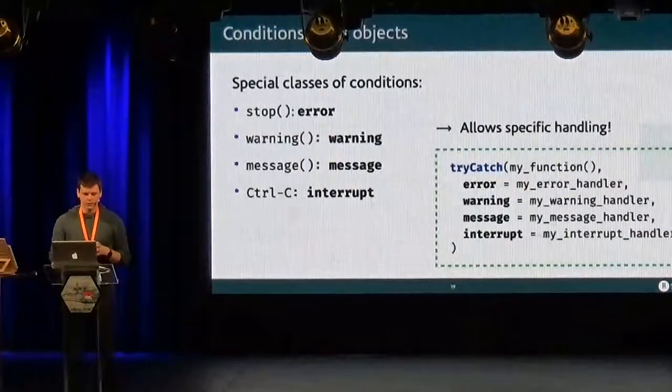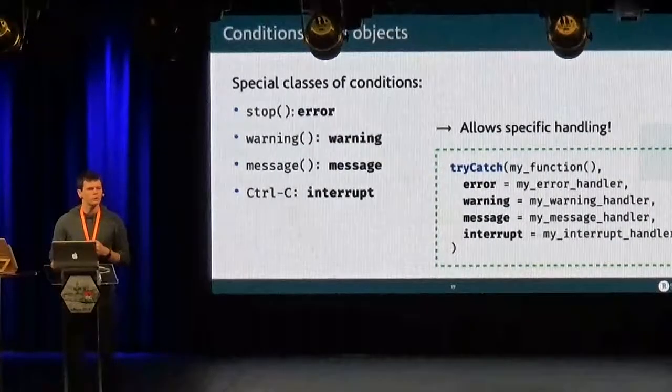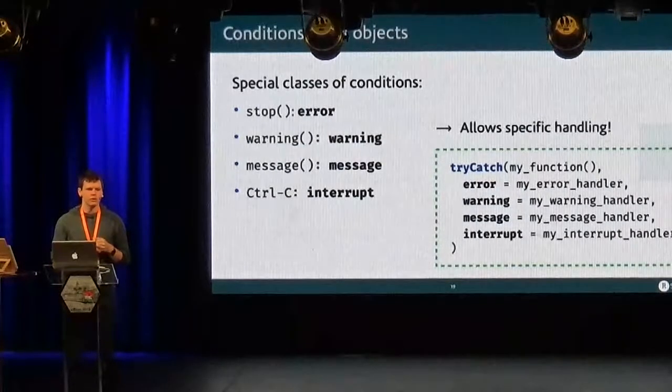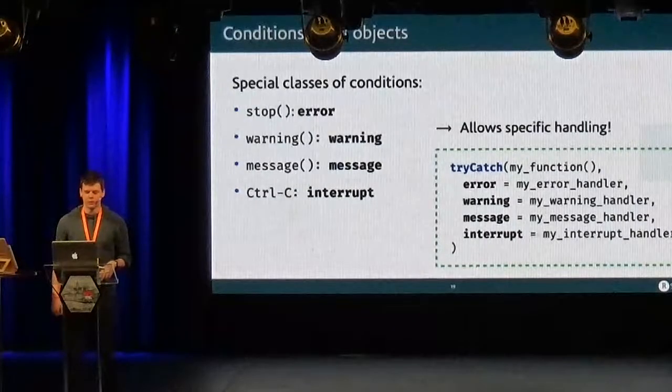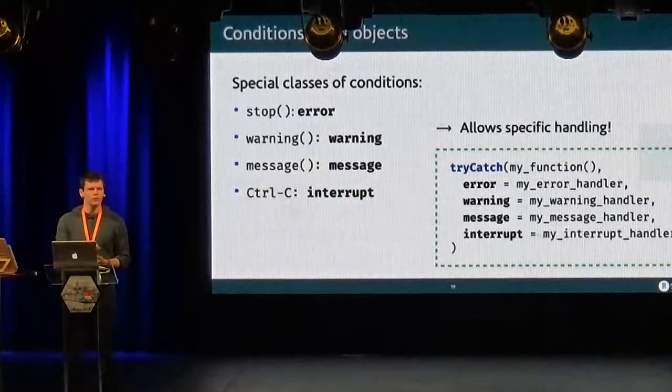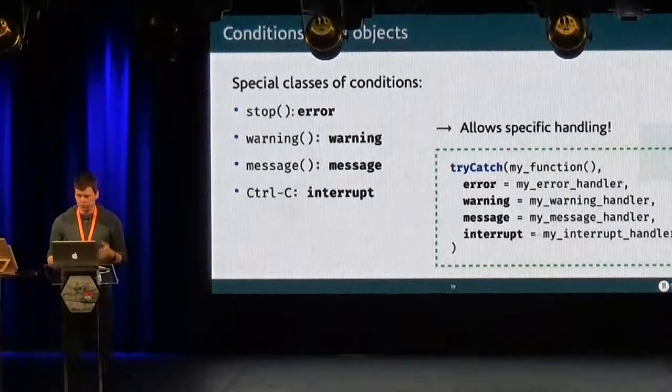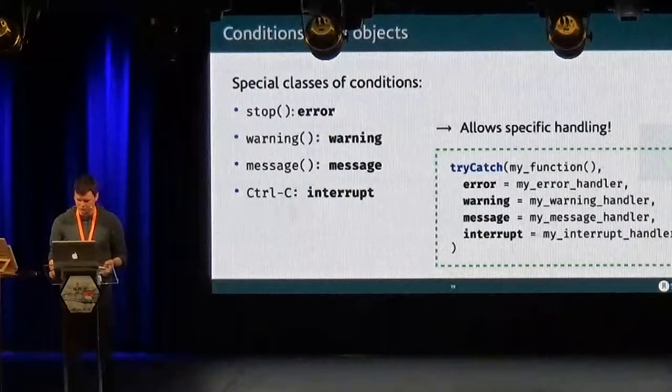So there are special classes of conditions in base R. You have the errors, the warnings, the messages. And even when you type Control-C to interrupt an R computation, even that is a condition that inherits from interrupt. And maybe you can handle it with try-catch, to do something a bit crazy.